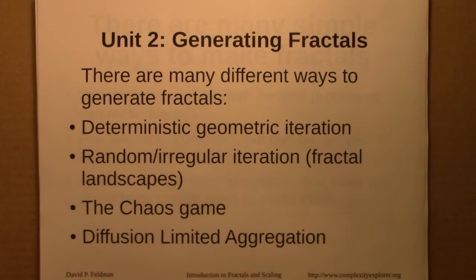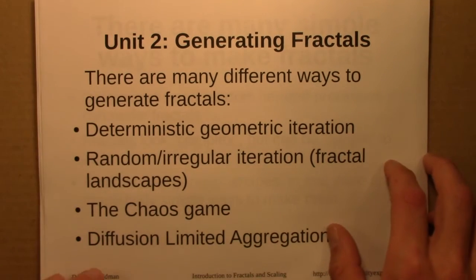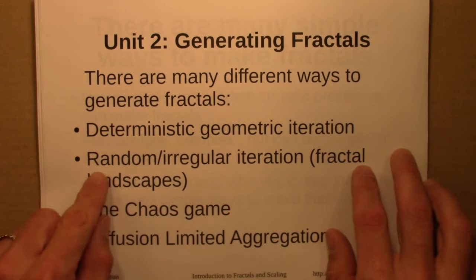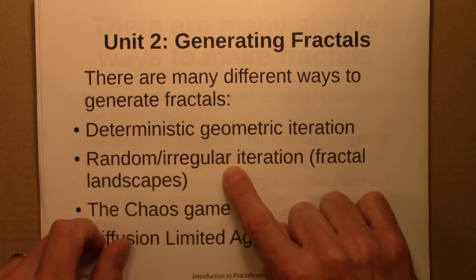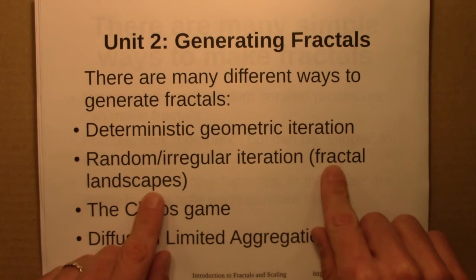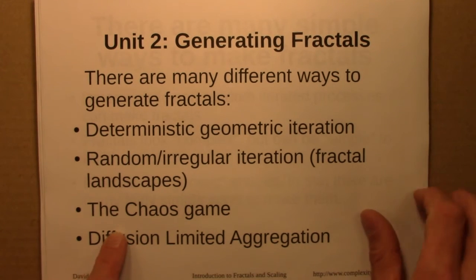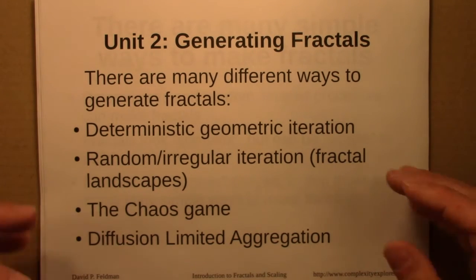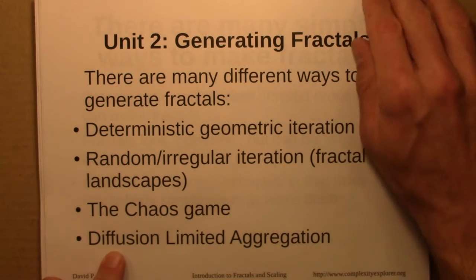Then in Unit 2, we asked how do we generate fractals? There are many different ways. Deterministic geometric iteration — just repeating certain geometric transformations again and again — and also with a bit of randomness or irregularity in the rule. We took a little detour and talked about how fractal landscapes can be generated. And then there's the chaos game, which generated the Sierpinski triangle by rolling dice, and diffusion-limited aggregation, where random walkers clump together and form fractal dendritic shapes.